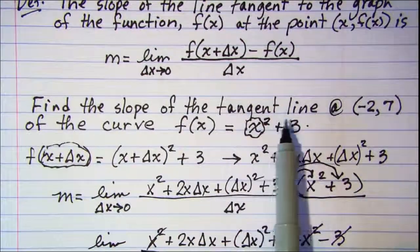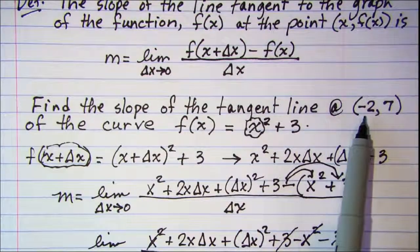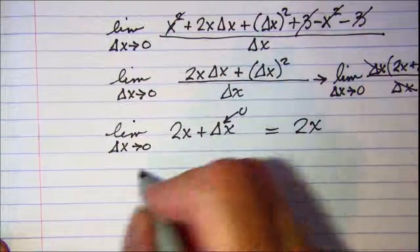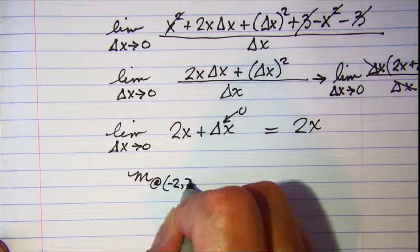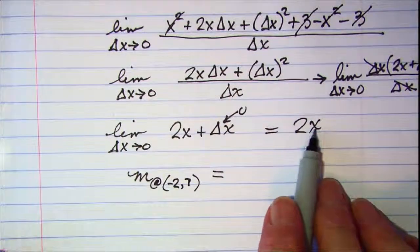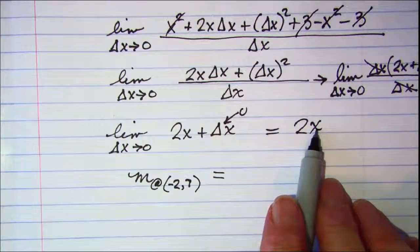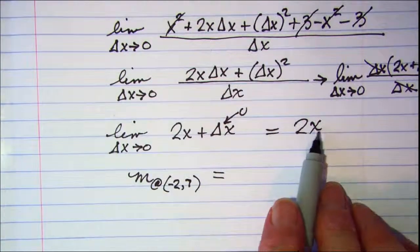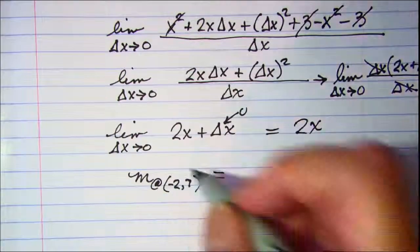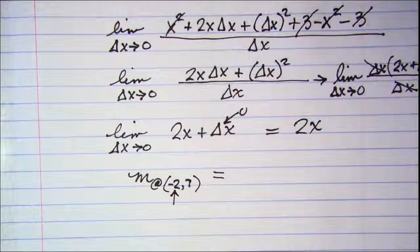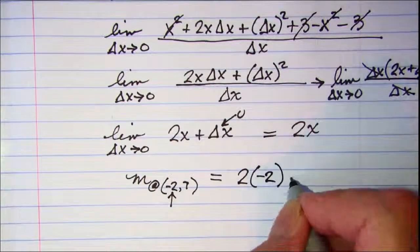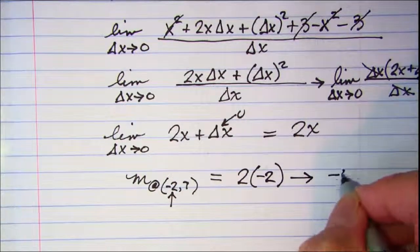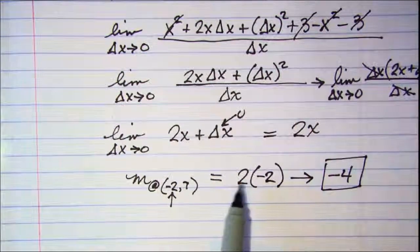Now I was asked to find the slope of the tangent line at the point (-2, 7). So my slope at (-2, 7). This is a generic equation for the slope at any given point, any x value. And since I want the slope at x equals -2, I'll just plug in -2 for x. And I get -4 as my slope of my tangent line at this point.